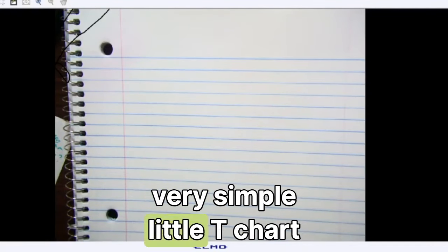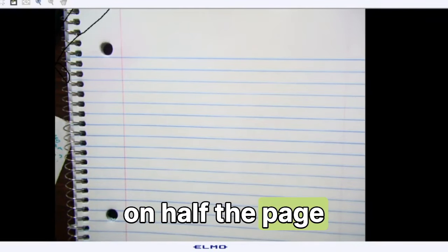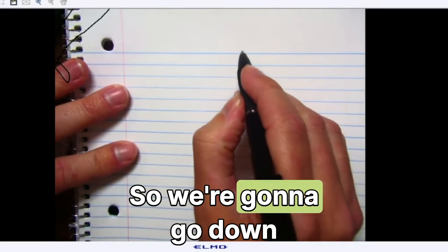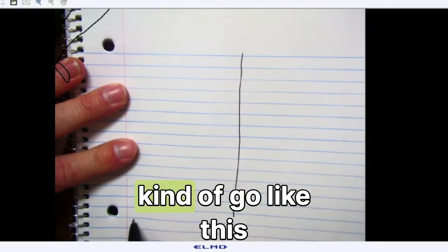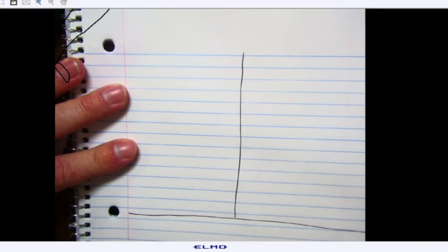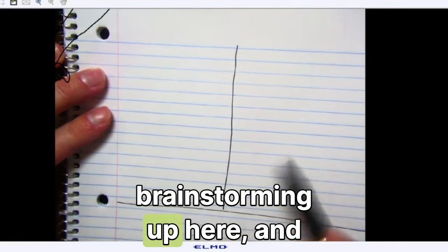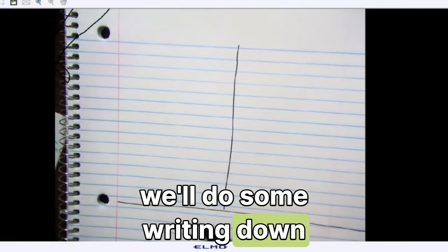What we're going to do here is make a very simple little t-chart on half the page. So we're going to go down, kind of go like this. We're going to do some brainstorming up here, and we'll do some writing down here.